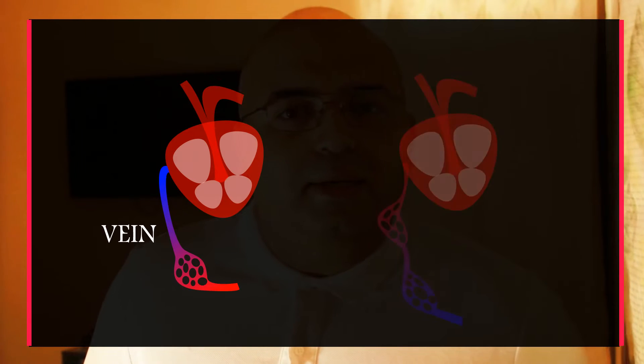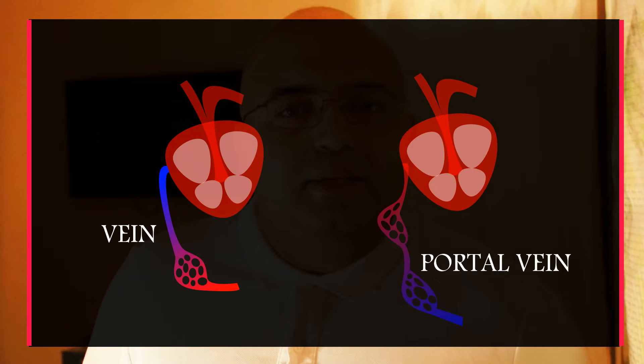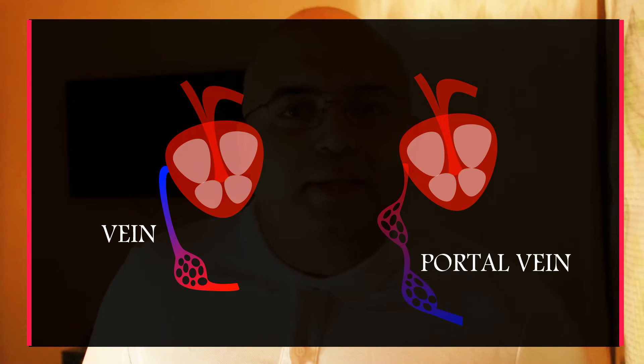We know that in human circulatory system, we have arteries, veins and capillaries. We normally know that a typical vein arises from an organ capillary bed and ends in the heart. In case of a portal system, a portal vein arises from a capillary bed and ends in another capillary bed.